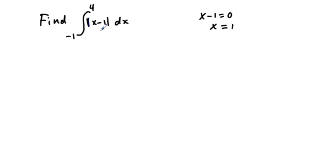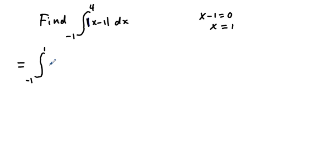We can separate this definite integral into two pieces. To the left of x equals 1, the function is going to be below the x-axis. So we separate the integral: one piece is from negative 1 to 1. Since this area to the left of 1 is below the x-axis, we make it positive by putting a negative sign out front, giving us the integral of x minus 1 dx.